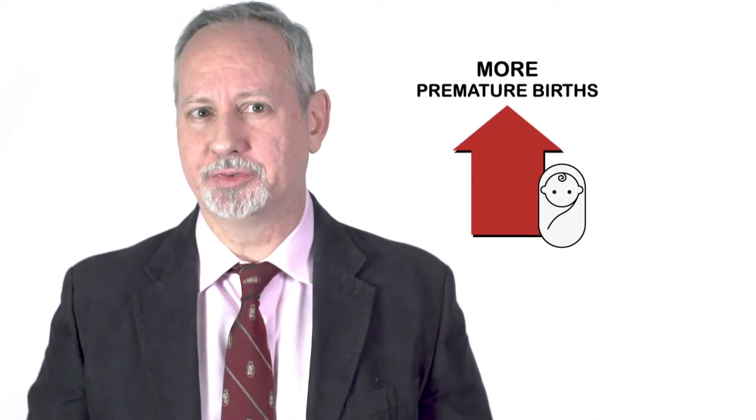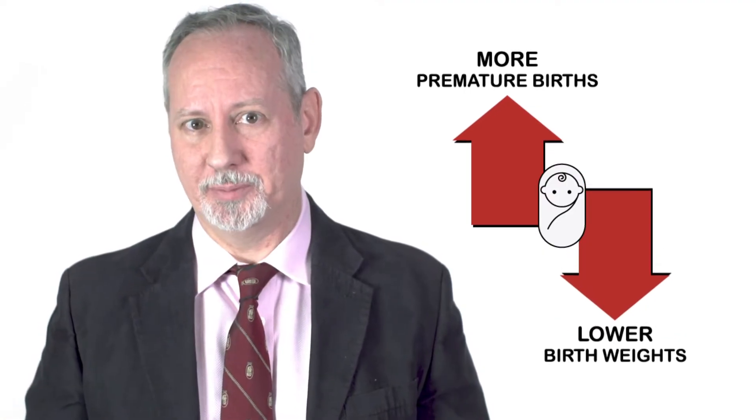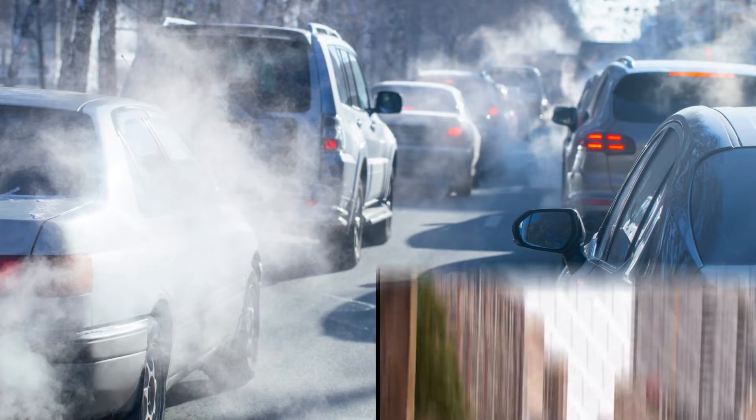Infants born in places with a lot of pollution tend to be born with worse health, more premature births, and lower birth weight. But infants born in places with worse pollution also tend to be different in other ways. They're born to poorer families. So what's causing the health problems? Is it the pollution, or is it the poverty?